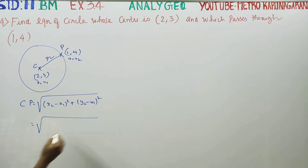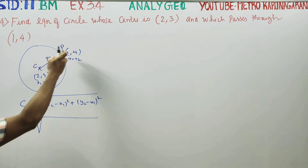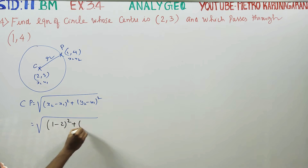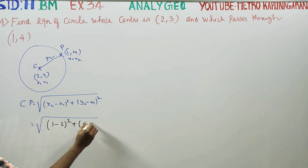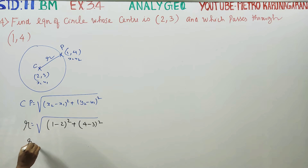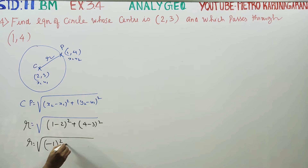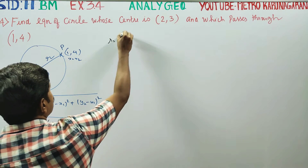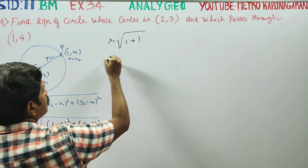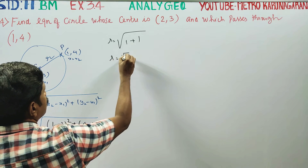Now, what is x2? Using the diagram, we substitute: square root of (1 minus 2) all squared plus (4 minus 3) all squared. CP equals radius, so r equals square root of (minus 1) squared plus (1) squared, which gives r equals square root of 2.